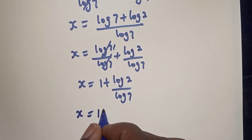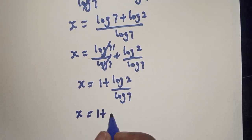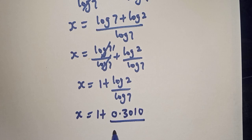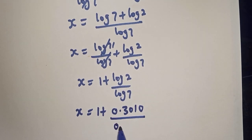S is equal to 1 plus log 2 over log 7. Log 2 is 0.3010 and log 7 is 0.8451.